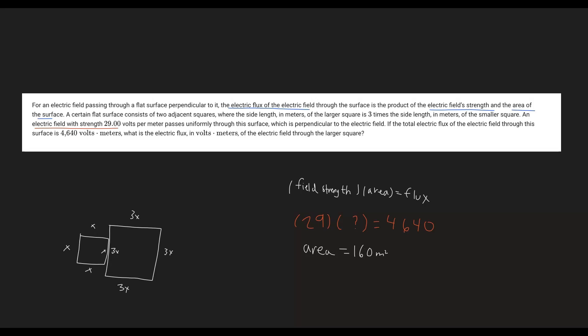So we have the total area of the adjacent squares, but we want to find just the area of the large square. If we do that, we can multiply that by the field strength to get the flux that it's affected by. We have the total area and we already have variables for the side lengths, so we can set 160 equal to...